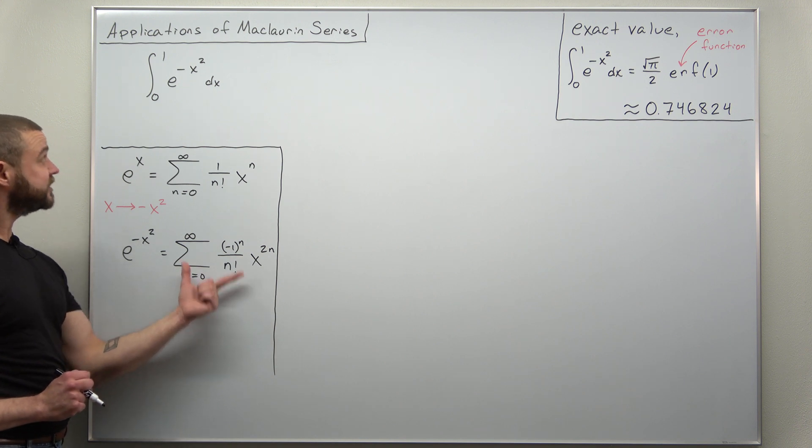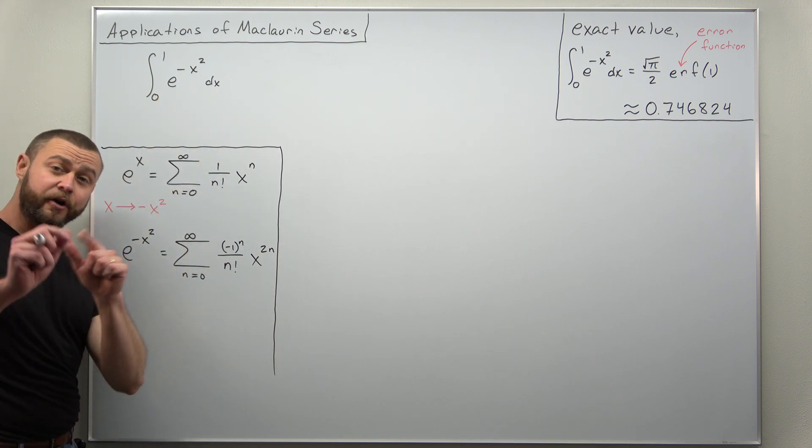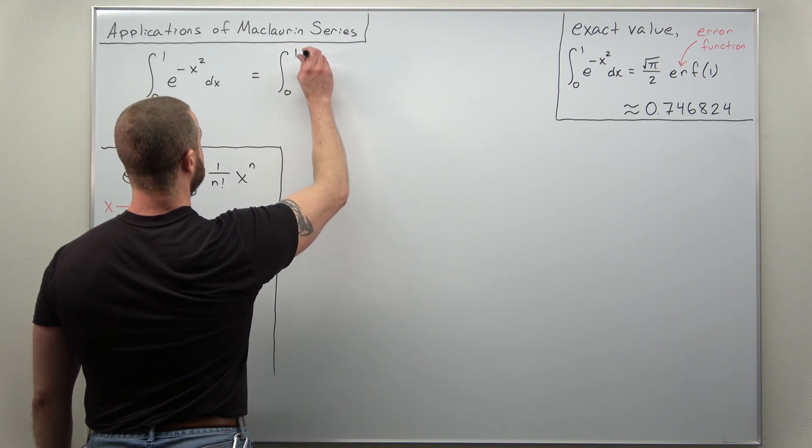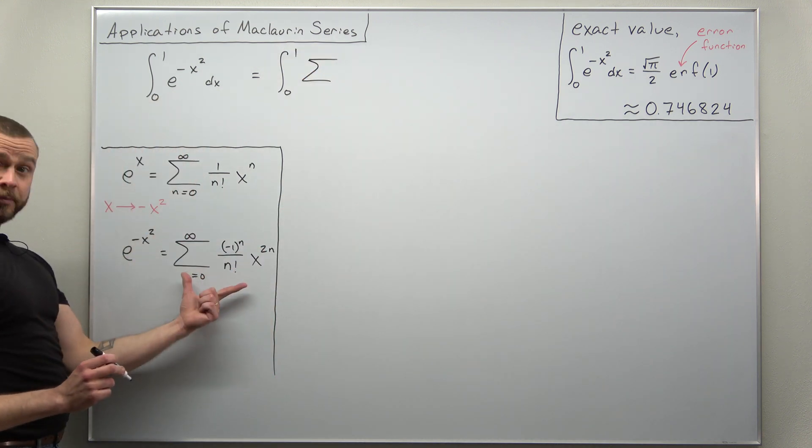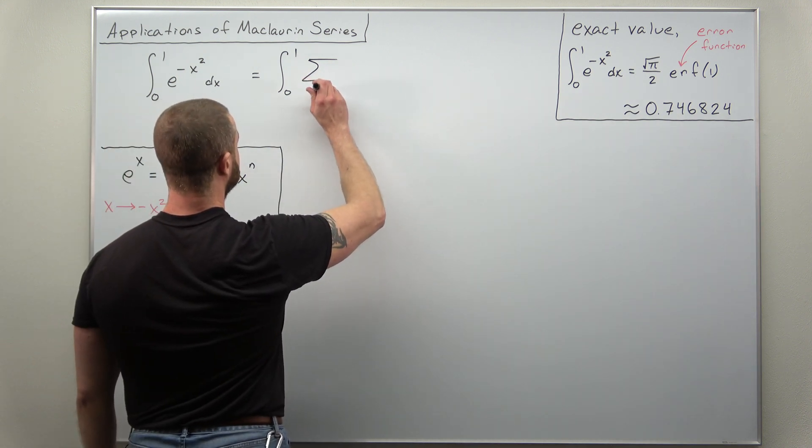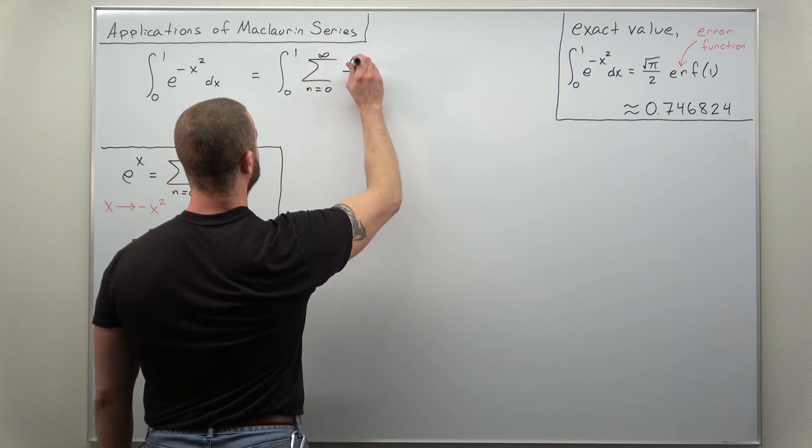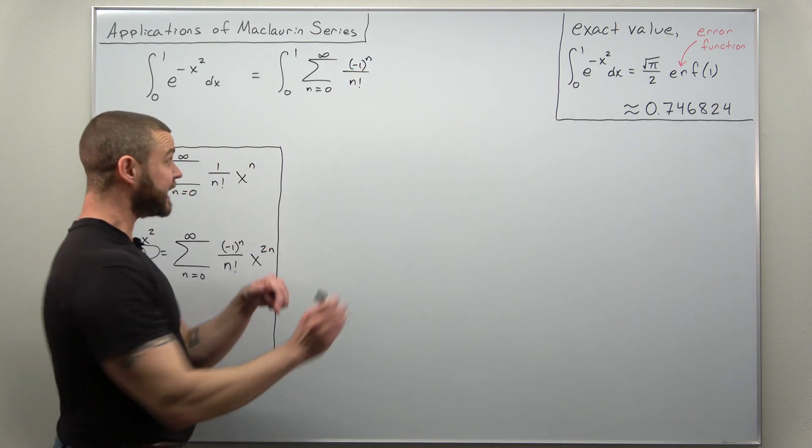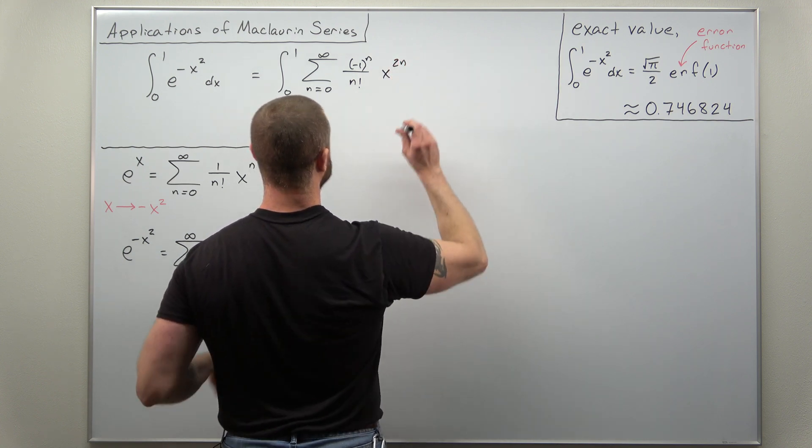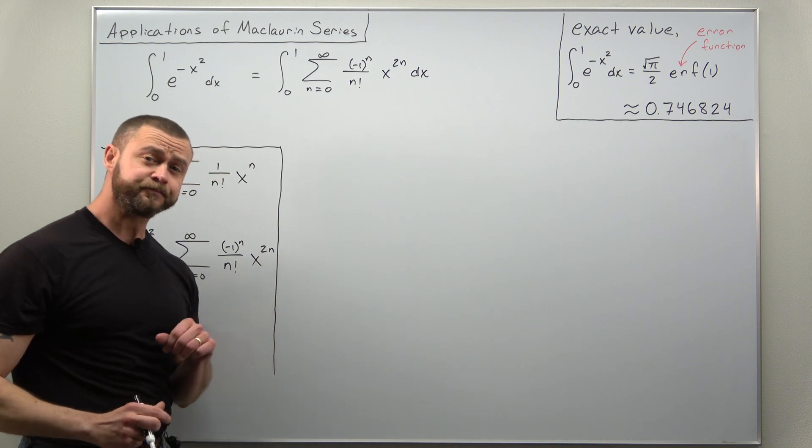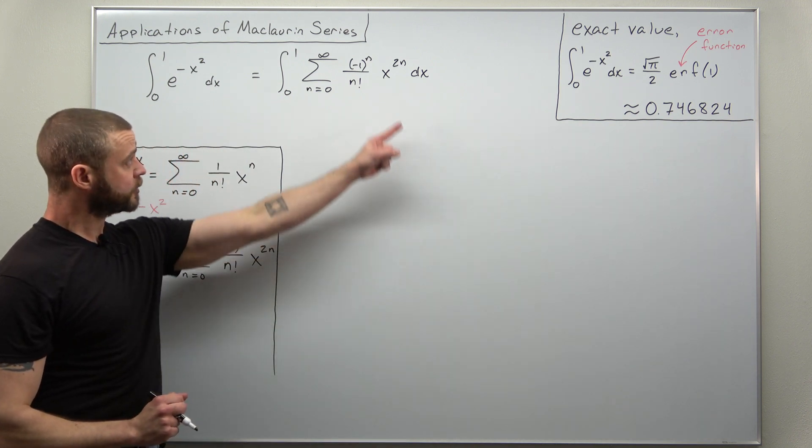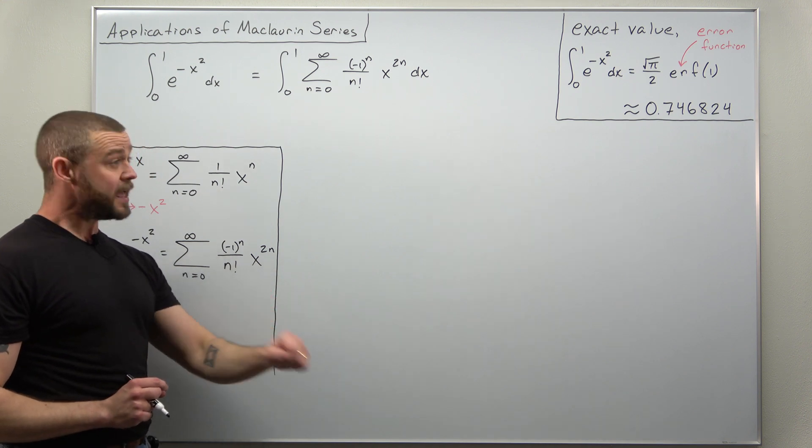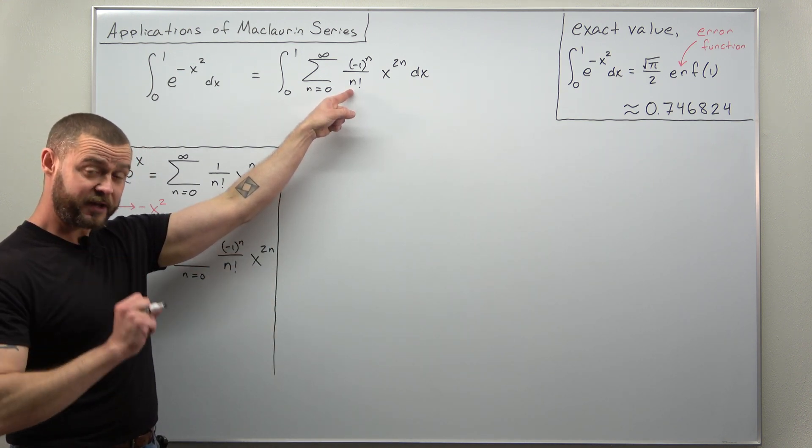Now how we actually use this is we're going to plug that in and integrate it term by term. So if we do that we get the integral from 0 to 1, we're going to replace our function with its Maclaurin series, the sum from n equals 0 to infinity of negative 1 to the n divided by n factorial times x to the 2n, and we integrate that all over x. To make this look as simple as possible, we're just going to integrate the power of x term by term.